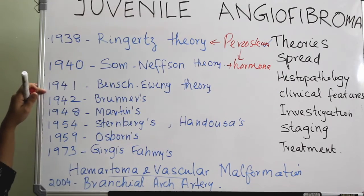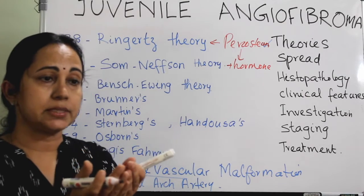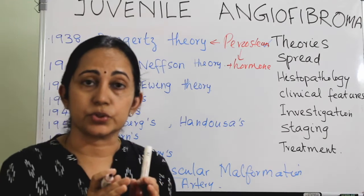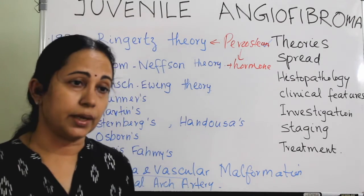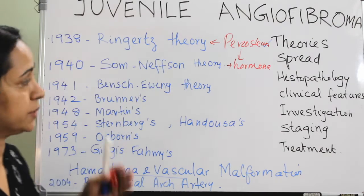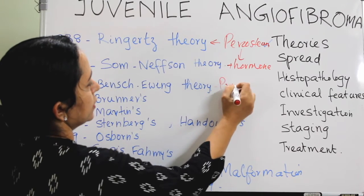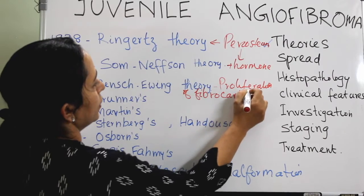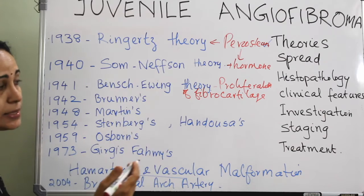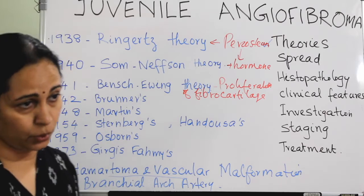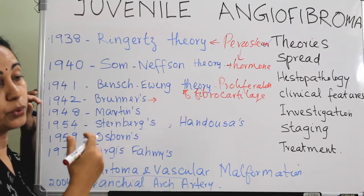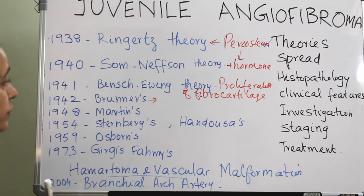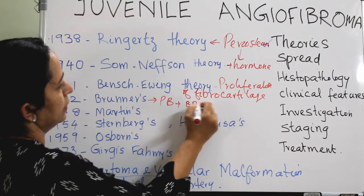The Benz and Ewing theory in 1941 states that the basisphenoid and basiocciput form the roof of the nasopharynx, and between these two bones there is a fibrocartilage. This embryonic fibrocartilage between the basisphenoid and basiocciput proliferates to form JNA. So this theory proposes proliferation of fibrocartilage between the basisphenoid and basiocciput.